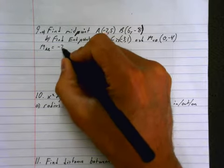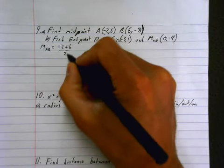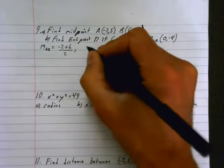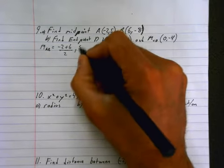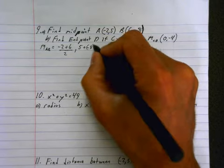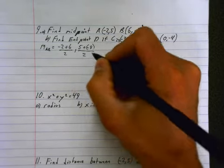you just add the two x's together. So negative 2 plus 6 divided by 2. So we just take the average of the x's and the average of the y's. So 5 plus minus 8 over 2.